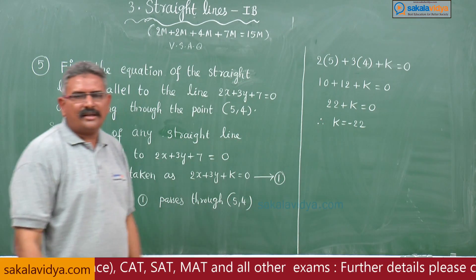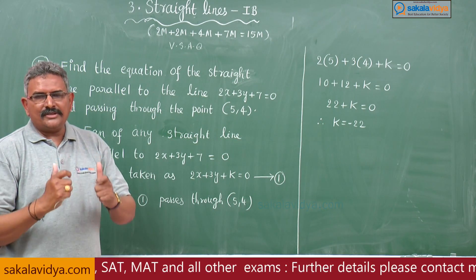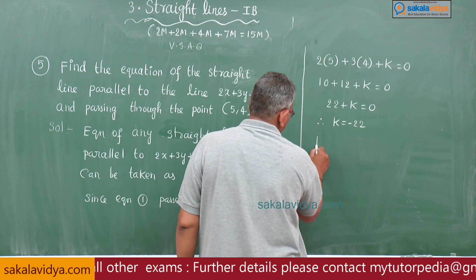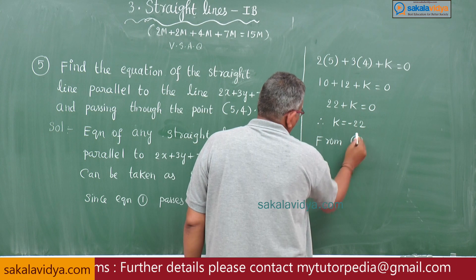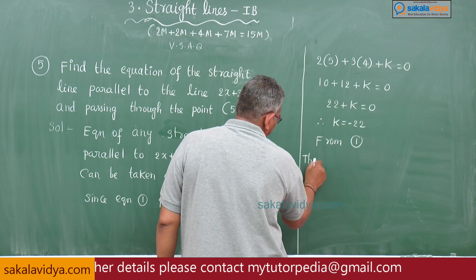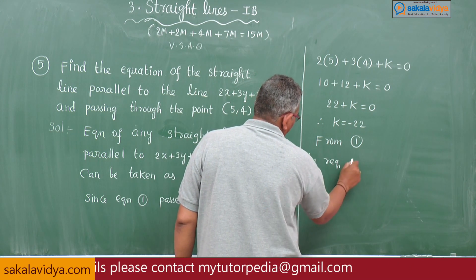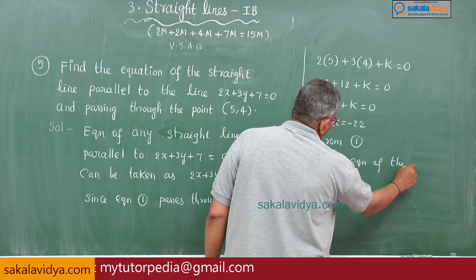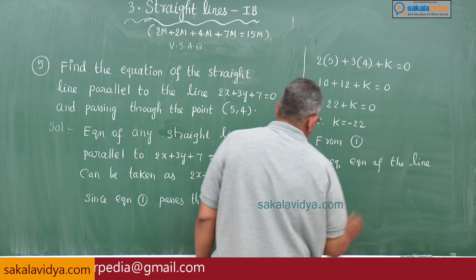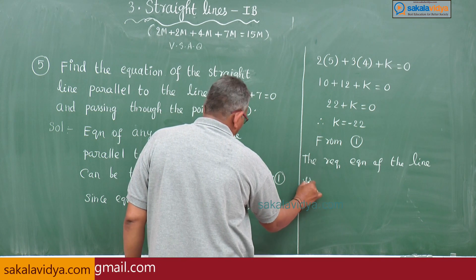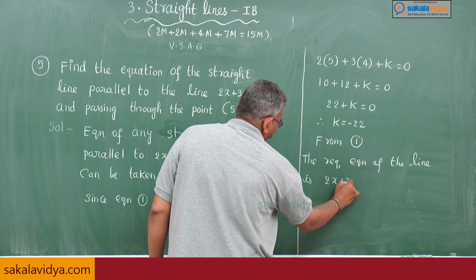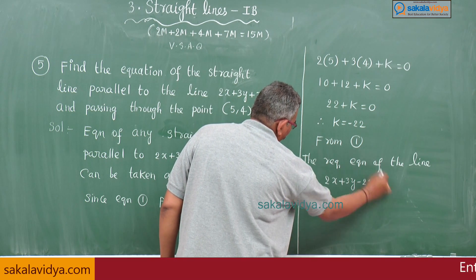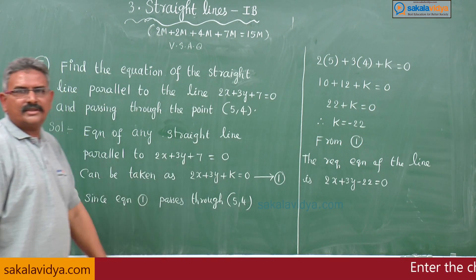So k is equal to minus 22. But finding k is not our aim — our aim is to find the equation of the line. From equation 1, the required equation of the line is 2x plus 3y minus 22 is equal to 0.